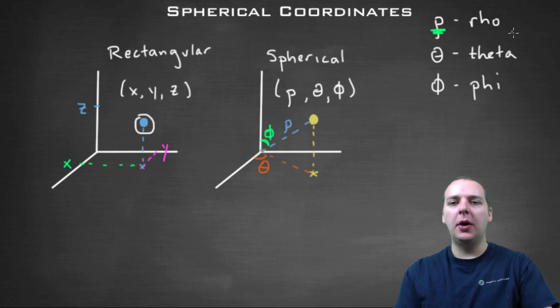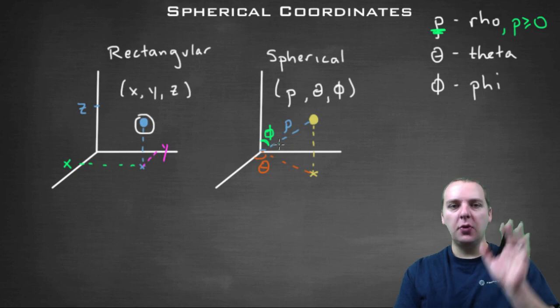A little side note about rho. Rho can't be negative, so this rho will always be greater than or equal to zero. So it's always going forwards in some particular direction.